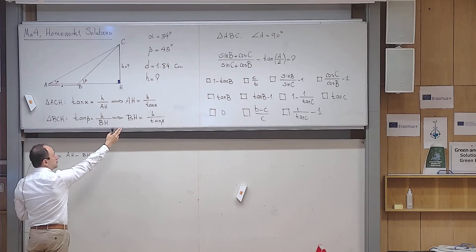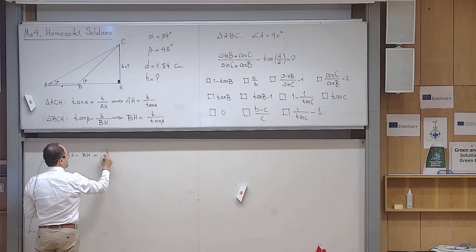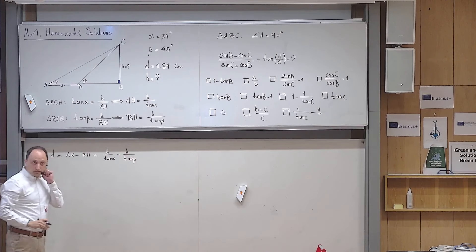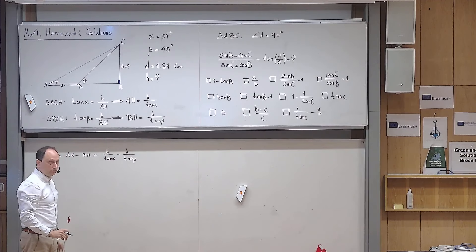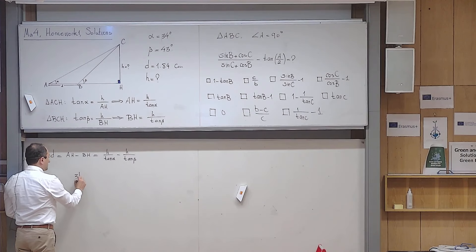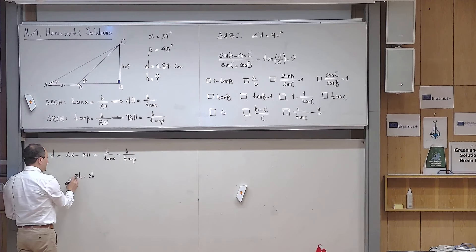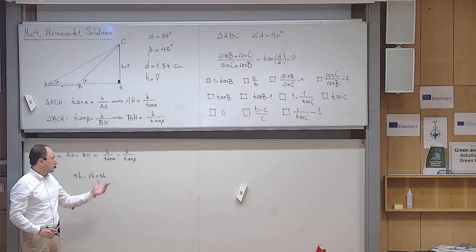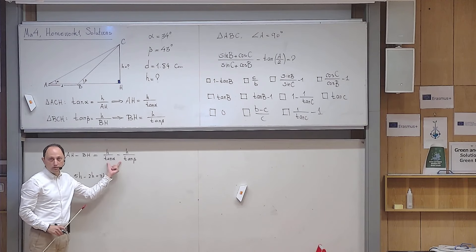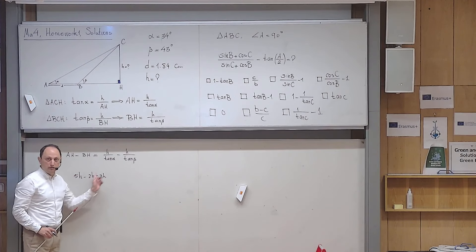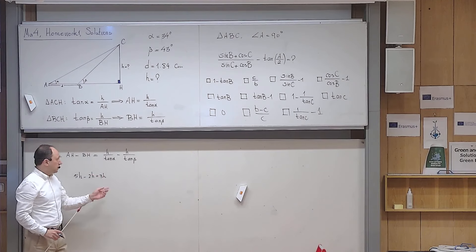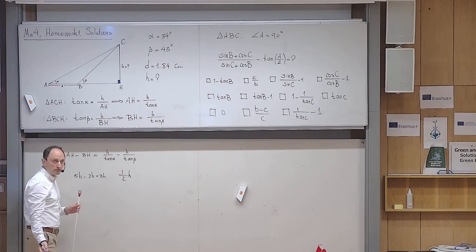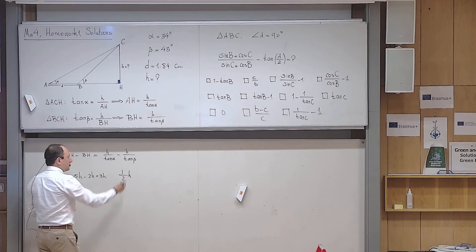AH and BH can be written using those formulas. Instead of AH, I write h divided by tan alpha; instead of BH, I write h divided by tan beta, and then subtract. The key is not to get confused — the problem is solved. For example, if I give you 5H minus 2H, you immediately write 3H. This is the same problem, because tan alpha is just a number, like 2, and tan beta is just a number, like 3. If you can solve the simple version, you can solve this one.